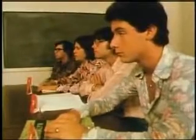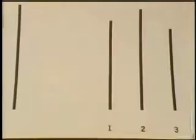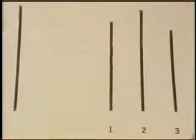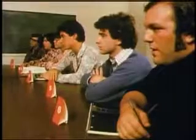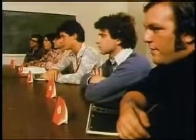One subject says: "One. They must be right — there are four of them and one of me." This subject's yielding is based on a distortion of his judgment. He genuinely believes that the group is correct.